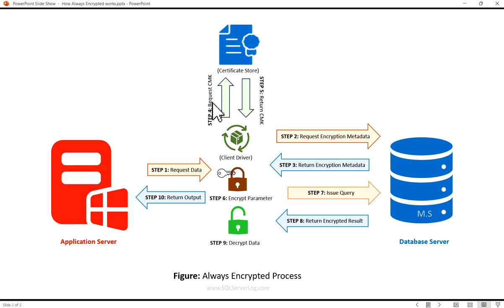In step four, request column master key, the client driver uses the information supplied within the encryption metadata to initiate a request to access the certificates and keys necessary for the required column master keys. Typically these certificates and keys are stored in the certificate repository on the application server. In cases where there are multiple application servers, each server must store the relevant certificates and keys. Alternatively, you can store the column master key in an external repository such as Azure Key Vault.